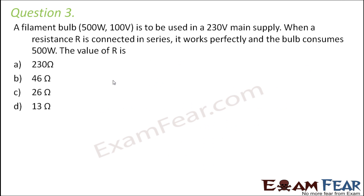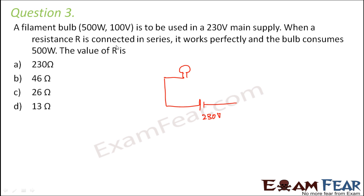Question number three: a filament bulb rated 500 watts, 100 volts is to be used in a 230-volt main supply. A resistance R is connected in series with it, and under these conditions the bulb works perfectly and consumes 500 watts. We need to find the value of R. First, draw the circuit: 230V supply with resistance R and the bulb in series.